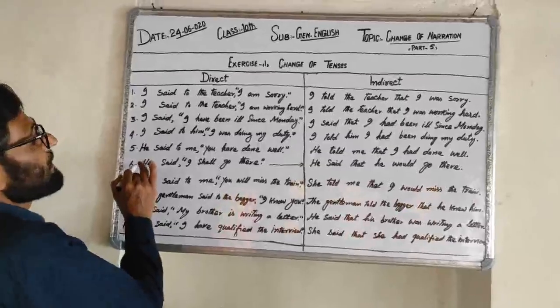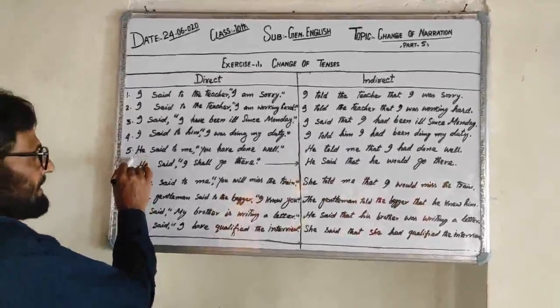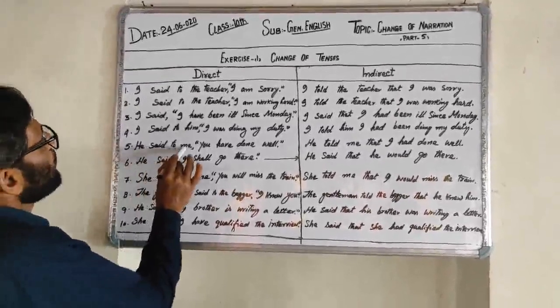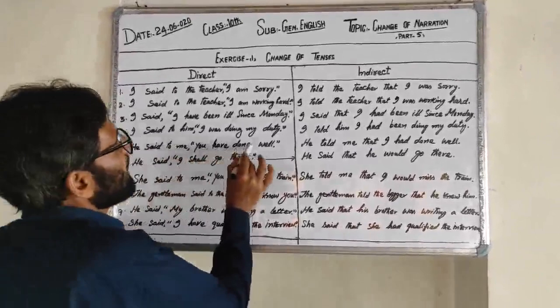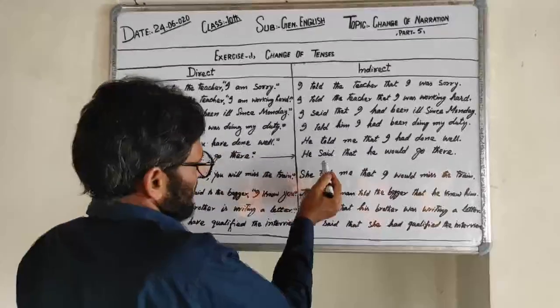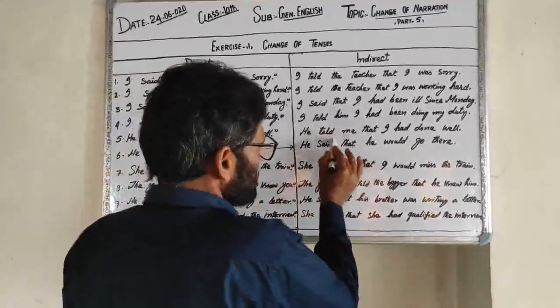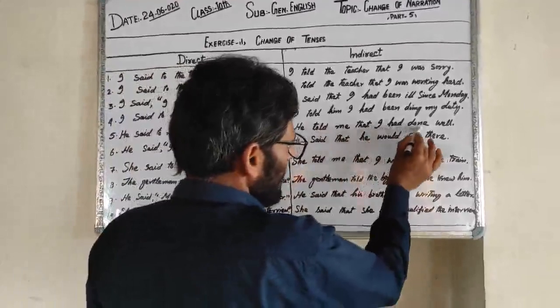Sentence 5: He said to me you have done well → He told me that I had done well.